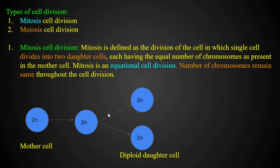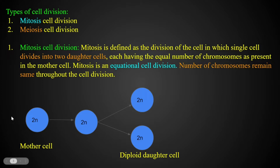What is mitosis cell division? For example, human beings have 23 pairs of chromosomes — that is 46 chromosomes. Chromosomes contain DNA and RNA. In mitosis, the mother cell has 46 chromosomes and the daughter cells also have 46 chromosomes — the number remains the same.